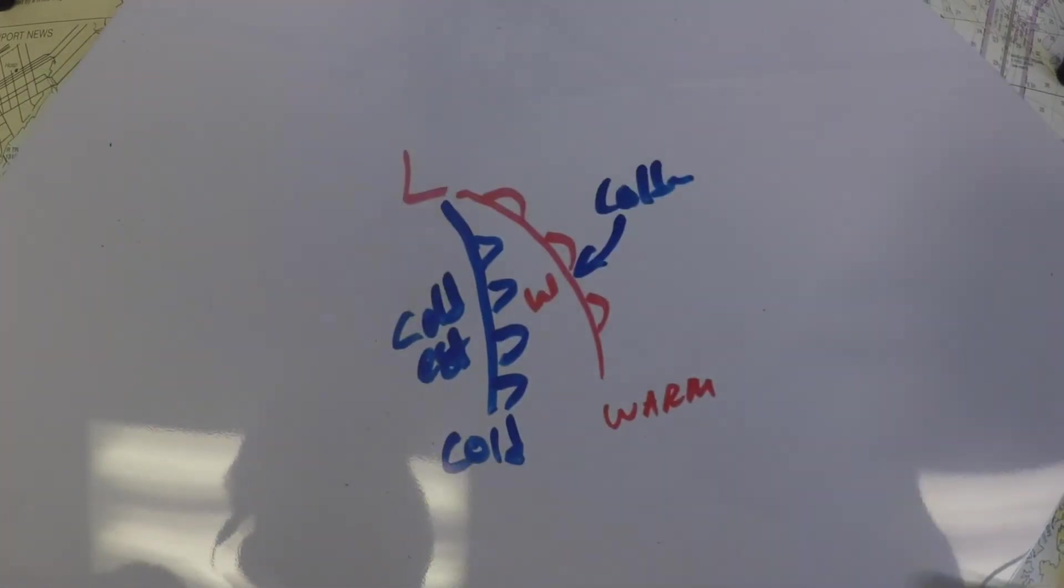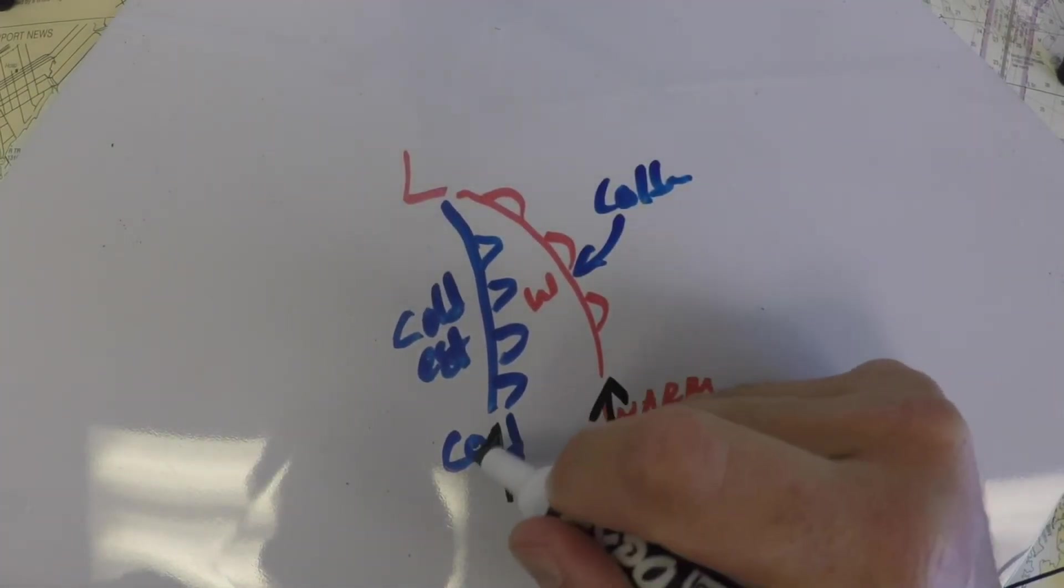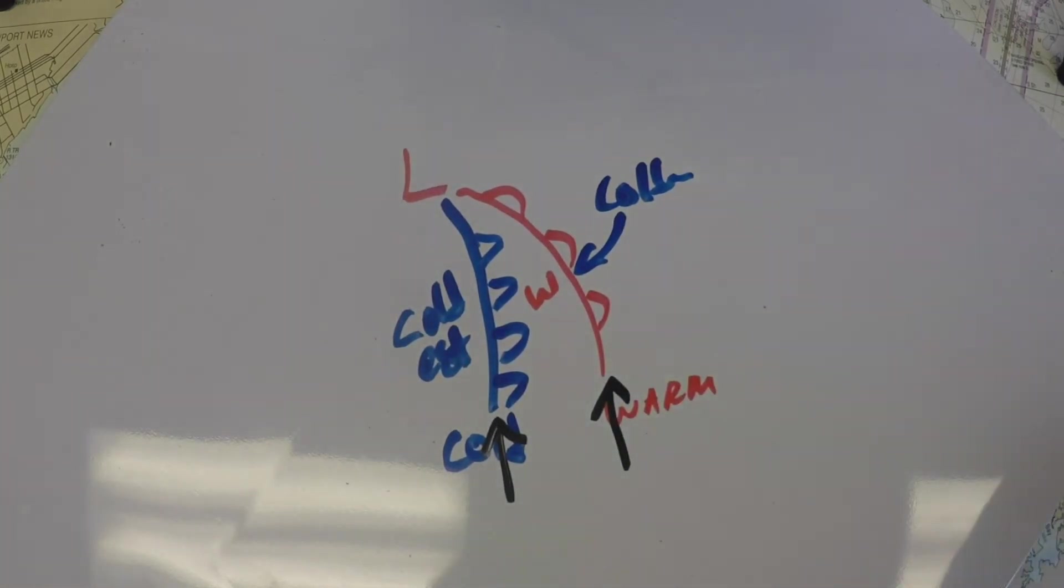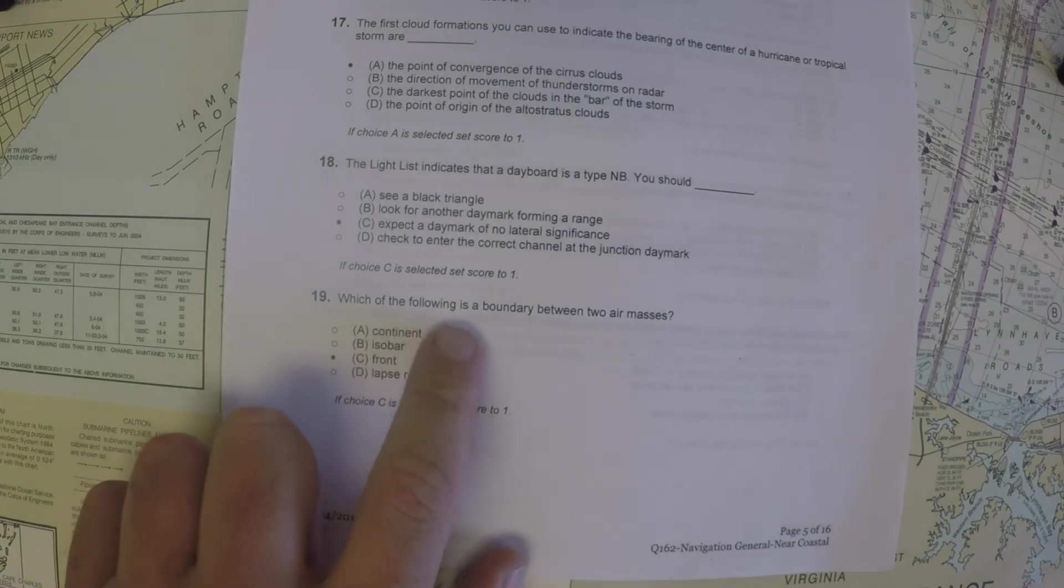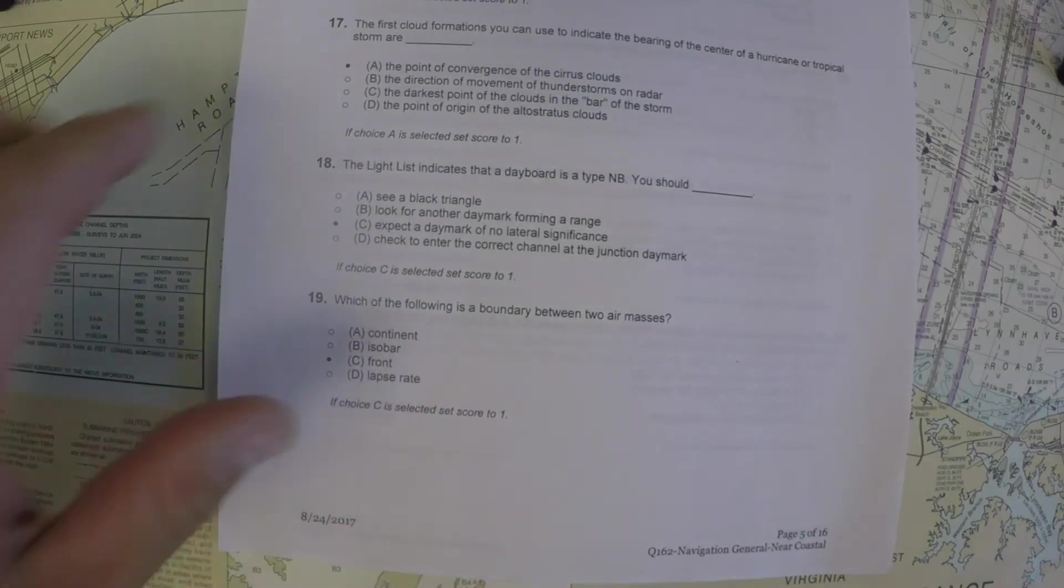So these things right here, these fronts, mark the edges of two air masses. And so that's going to be the correct answer. In this case, which of the following is the boundary between two air masses? It's going to be a front.